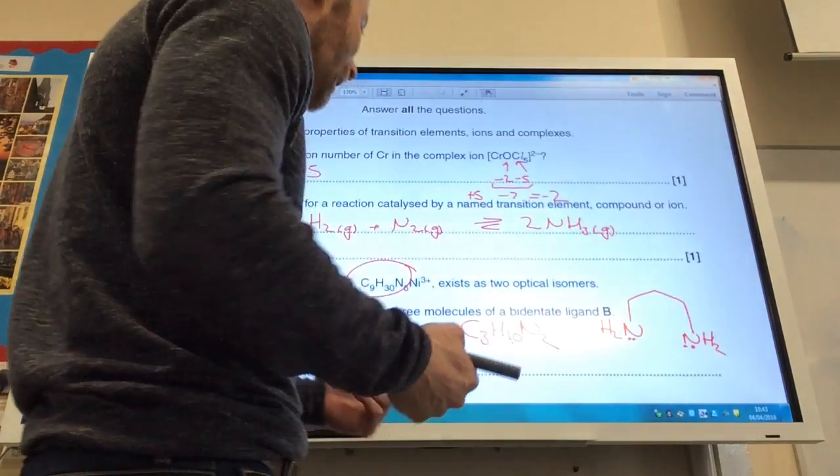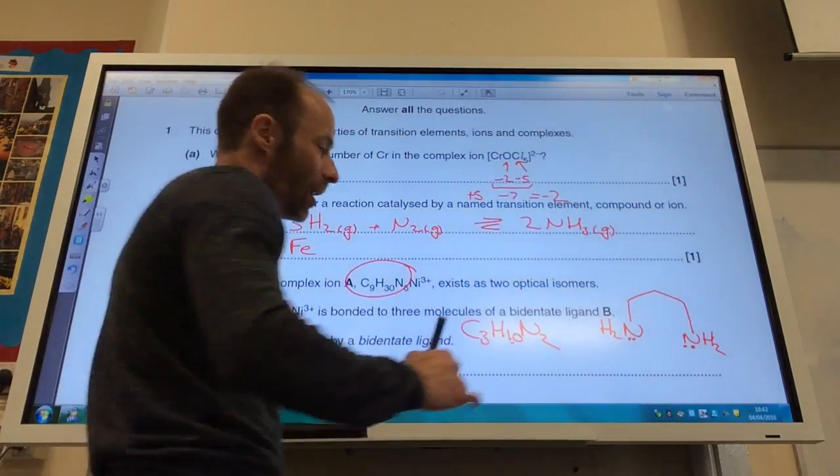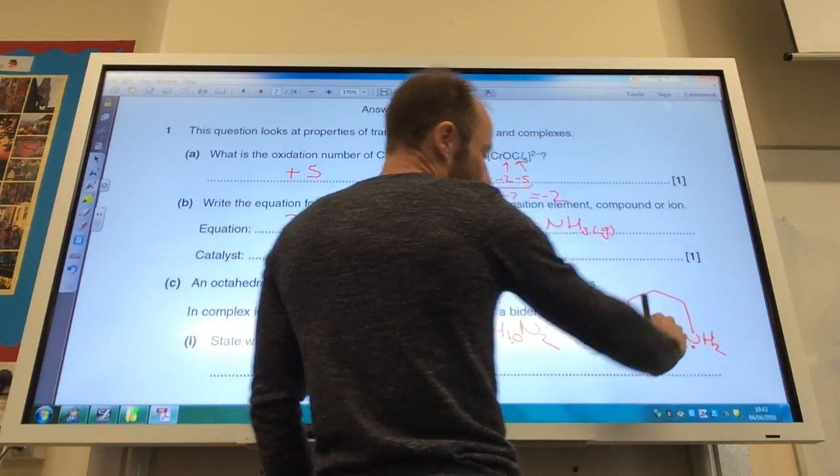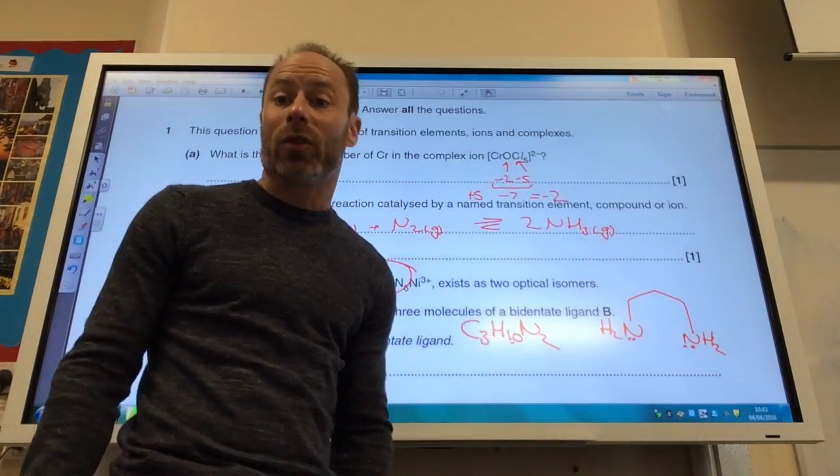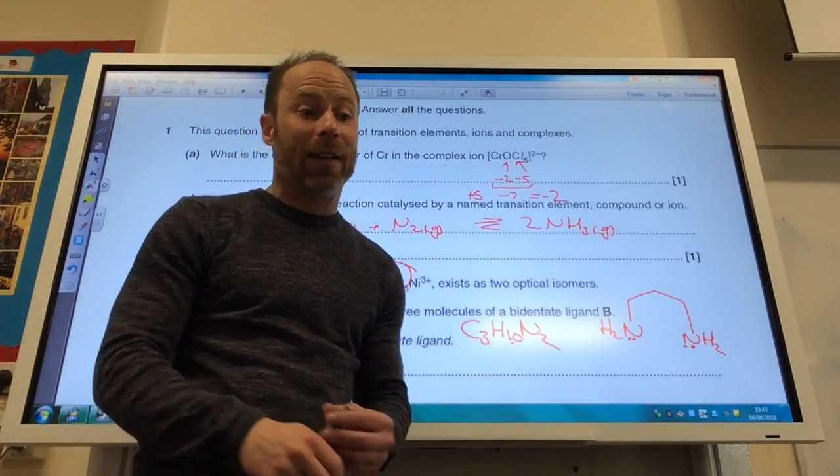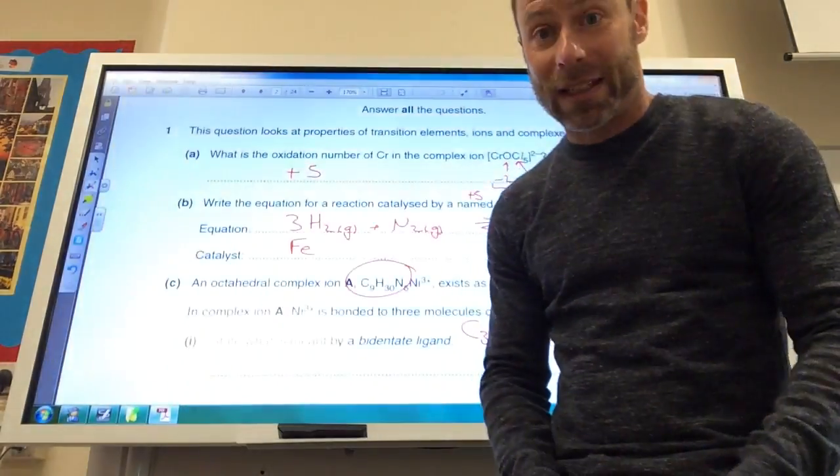And finally, what is the coordination number for this complex? Well, if I've got three of these, each of these has two coordinate bonds, so overall it's going to have a coordination number of six.